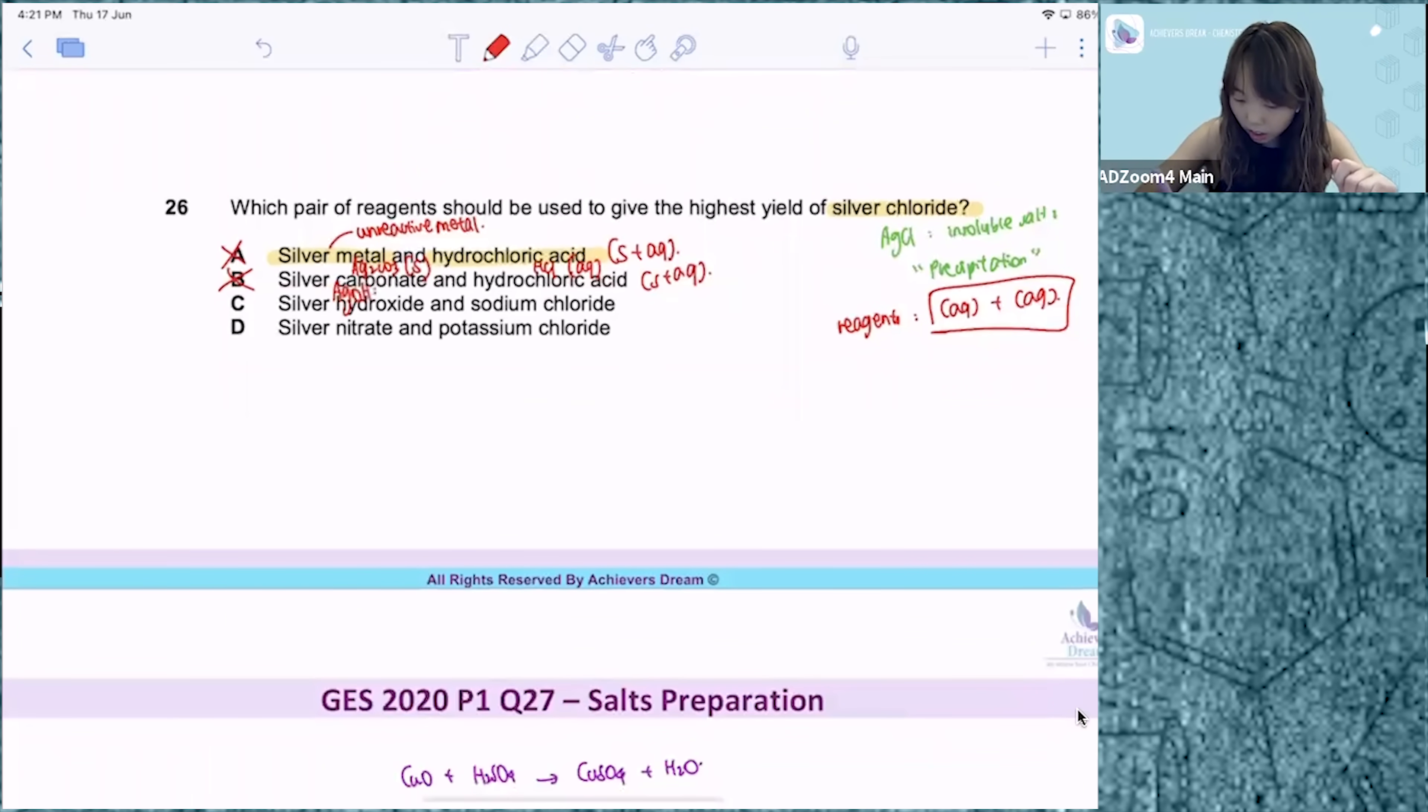Option C, silver hydroxide. Again, it is an insoluble salt with NaCl. This is soluble because it's a group 1 compound and all group 1 compounds are soluble. Again, solid-aqueous combination, not the answer.